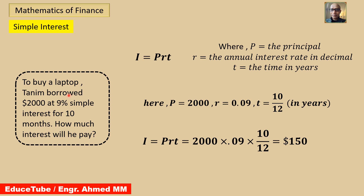Here we have an example. For buying a laptop, money is borrowed from the bank — $2000 at 9% simple interest for 10 months. How much interest will he pay? P equals 2000, R equals 0.09, T equals 10/12 because time must be in years, so it is divided by 12. Putting all values, we get interest equal to $150. It is very simple.